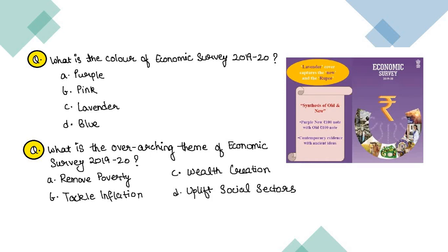What is the color of Economic Survey 2019-20? The options are purple, pink, lavender, or blue. The correct answer is lavender — a light purplish color. If the lavender option is not given in prelims and options are purple, pink, blue, or black, you can tick purple. But remember, it is lavender.